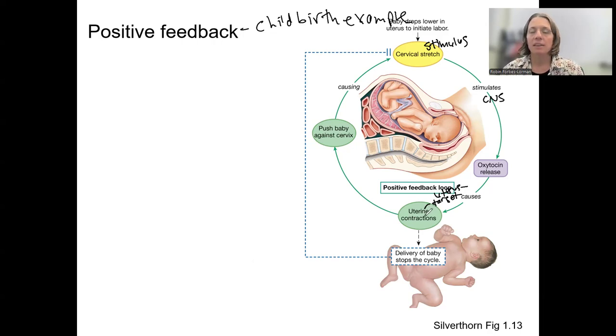The main thing here is that the release of oxytocin causes more contractions, which causes more stretch because the baby is pushing down more on the cervix. And that's what makes it a positive feedback loop. More stretch means more oxytocin. More oxytocin means more contractions. More contractions means more stretch. That's going to continue to amplify and everything increase each other, this cycle, until the baby is delivered.